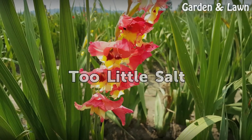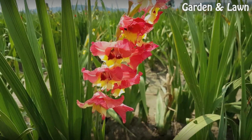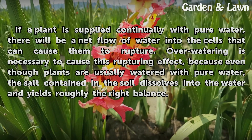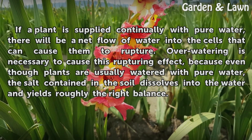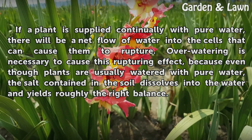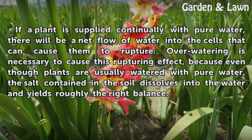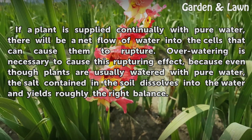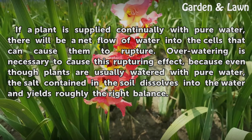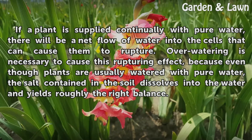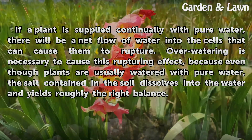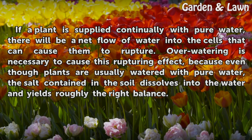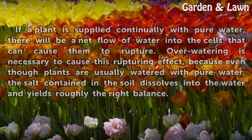Too little salt. If a plant is supplied continually with pure water, there will be a net flow of water into the cells that can cause them to rupture. Overwatering is necessary to cause this rupturing effect, because even though plants are usually watered with pure water, the salt contained in the soil dissolves into the water and yields roughly the right balance.